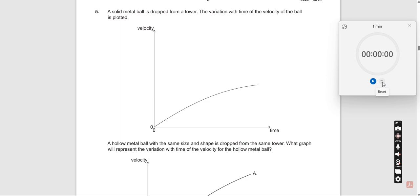Okay, now we are at the fifth question. We are not able to see the full question but anyway we will just scroll it across. Let me stop the timer. A solid metal ball is dropped from a tower, so you are standing on top of a tower and from here you are dropping this.